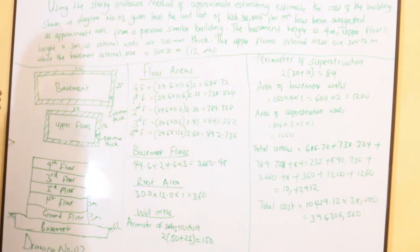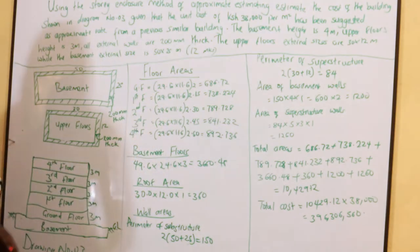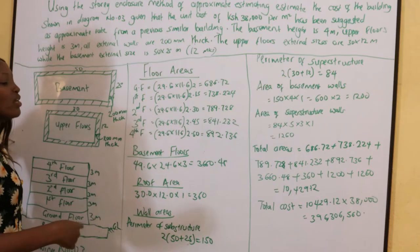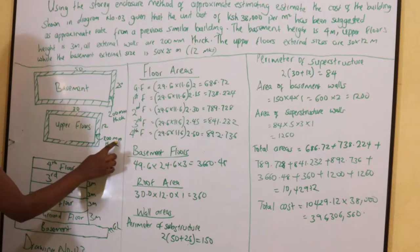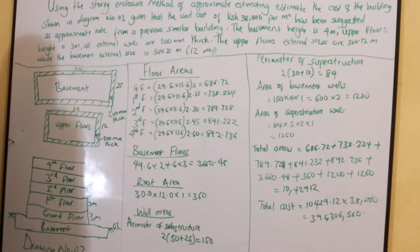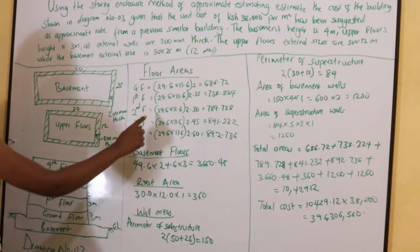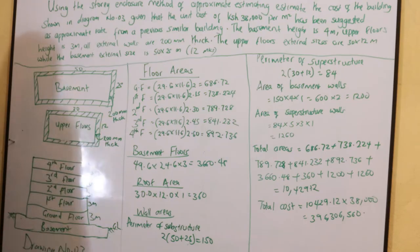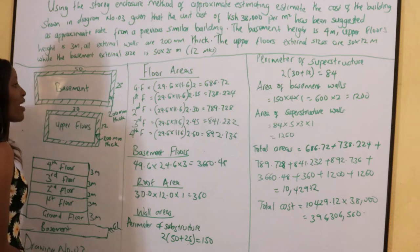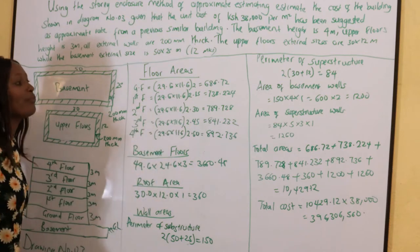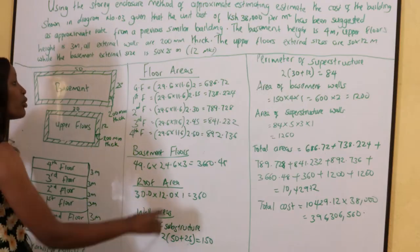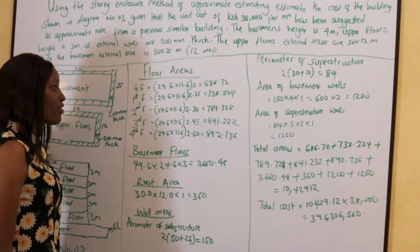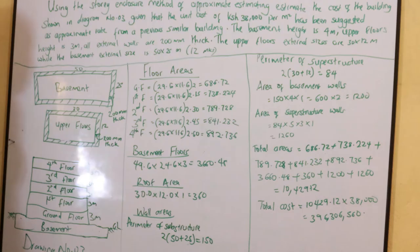We start with the floor areas. For the ground floor — which is among the upper floors — we use internal areas. The external dimension was 30 meters, and deducting 400 millimeters for wall thickness on both sides gives 29.6 meters. Similarly, 12 meters minus 400 millimeters gives 11.6 meters. The ground floor area is therefore 29.6 times 11.6, weighted by a factor of 2, giving 686.72 square meters.